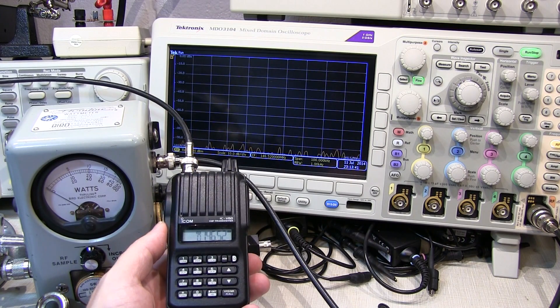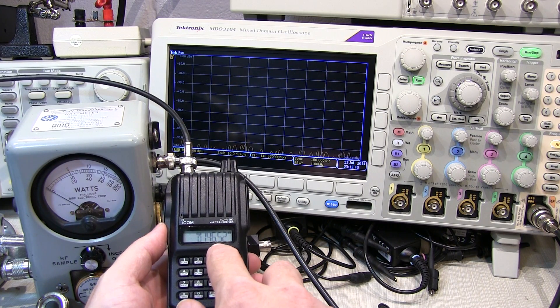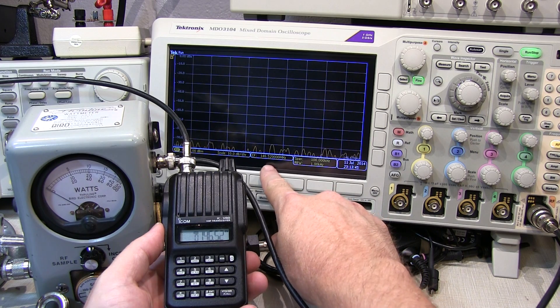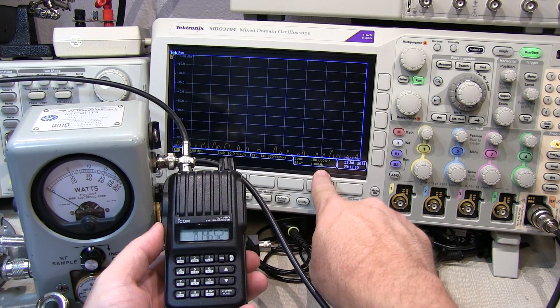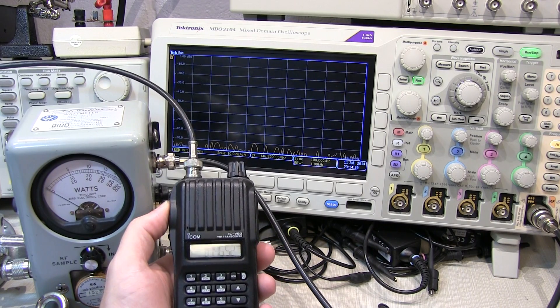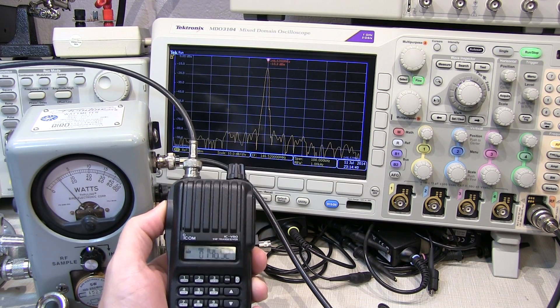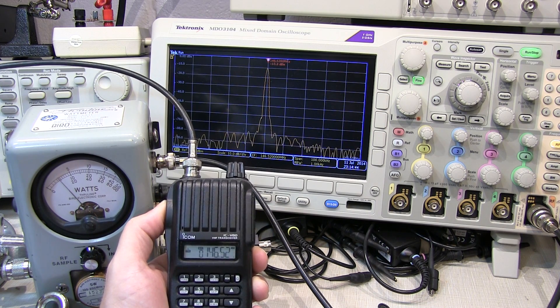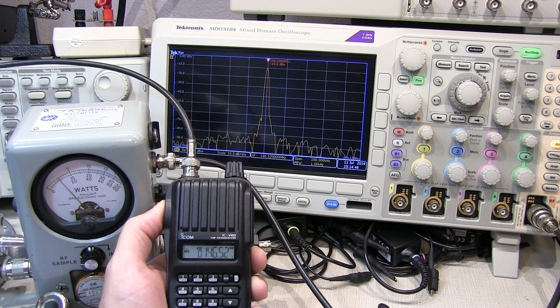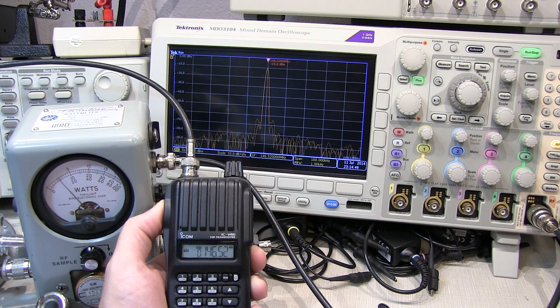The transmitter is set to 146.52 megahertz, which is the center frequency of the spectrum analyzer. I have the span set to 100 kilohertz. On keying the transmitter, we can see on the watt meter that I'm putting out about 500 milliwatts. The handheld is set to low power, and I can see the spectrum of the signal on the spectrum analyzer.